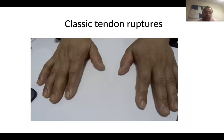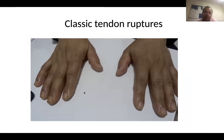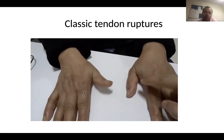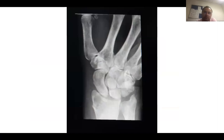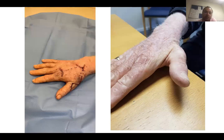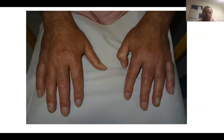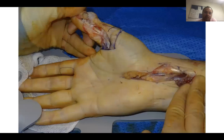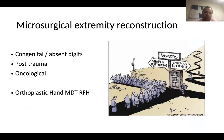You may also see some tendon ruptures. This patient had an EPL rupture — most likely a nutritional rupture because he had a distal radius fracture some time ago — and he couldn't move his thumb at all. This can be treated by a tendon transfer, which can be done under local anaesthetic. The other classical tendon rupture is FPL rupture — the patient couldn't move his thumb on the left hand — and we did a tendon graft to reconstruct that. The other area of interest I have is microsurgical reconstruction.